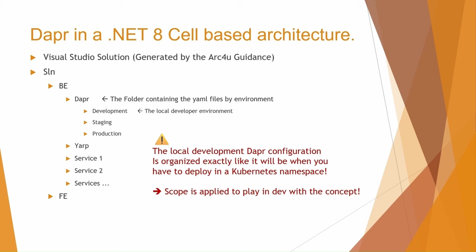What I like about implementing the cell-based architecture in code is that the developer has the same configuration locally that they'll use in production. All components for all services in the cell are in one folder, and the developer must use scopes to select which component is used for a specific service — exactly like deploying in Kubernetes where you deploy all components in a namespace and use scopes to filter which component is used by which service.